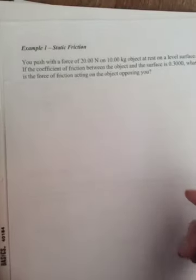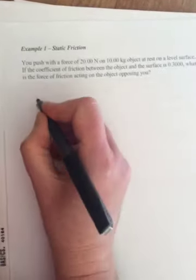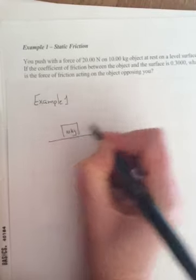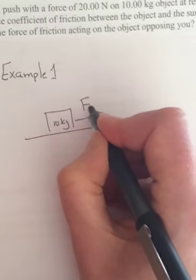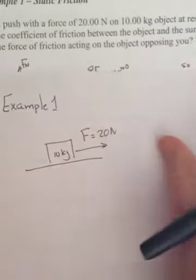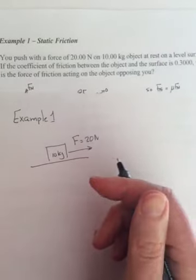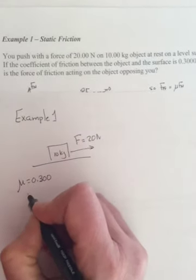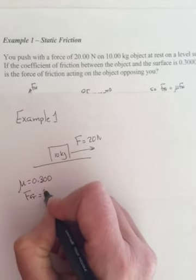So now it's time to do a few examples using all of this. Try to find a sheet of paper I haven't written on. Alright. Example number one. And if we were in class, I would give you a nice sheet that had this example number one on it. But since we aren't, we'll have to do it like this. So example number one says, you push with a force of 20 newtons on a 10 kilogram box. So this is example one. And so here's my 10 kilogram box. And I'm pushing with a force of 20 newtons. And it's initially at rest on a level surface. If the coefficient of friction between the box and the surface is 0.3, what is the force of friction acting on the object opposing you? So FFR is what you're looking for.